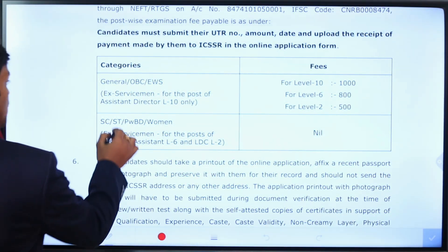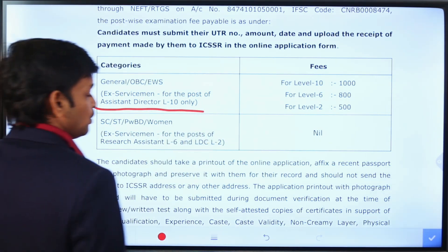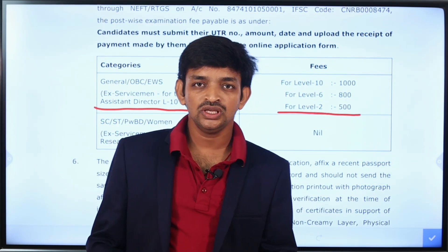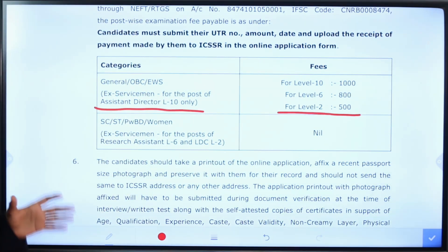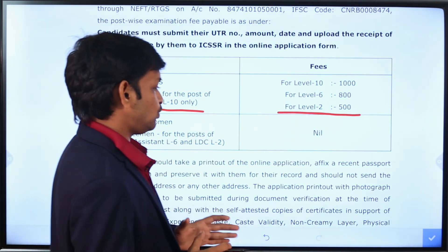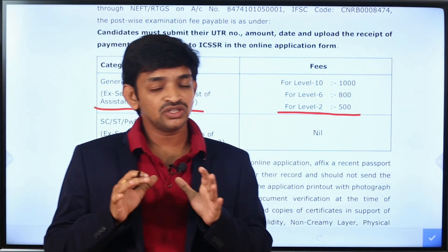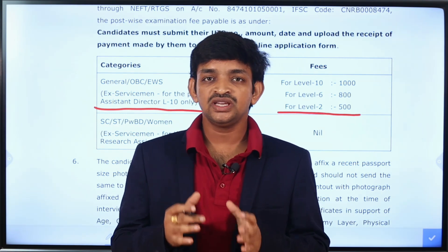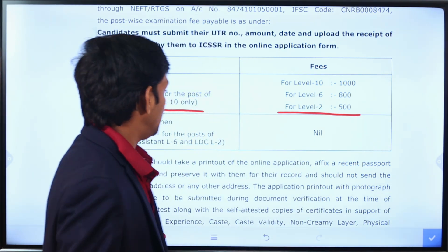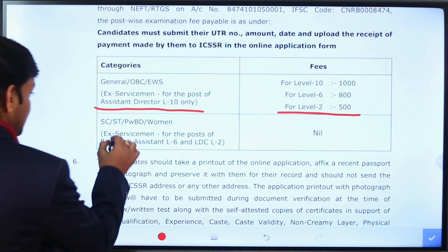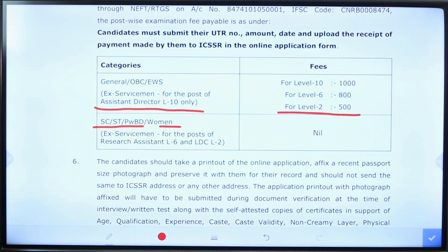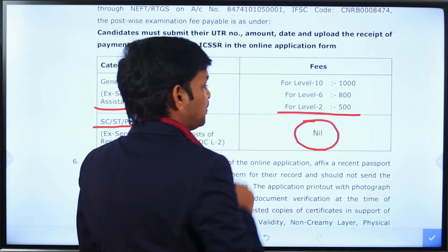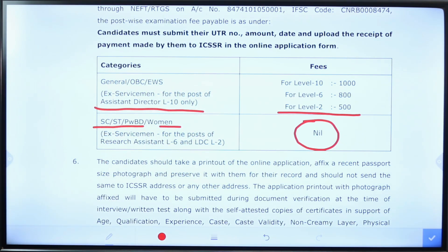Regarding application fees for the Lower Division Clerk post at Level 2, the application fee is 500 rupees for General category, OBC category, and Economically Weaker Section category candidates. The remaining categories such as SC, ST, Persons with Benchmark Disabilities, Women Candidates, and Ex-Servicemen candidates are exempt from the application fee.